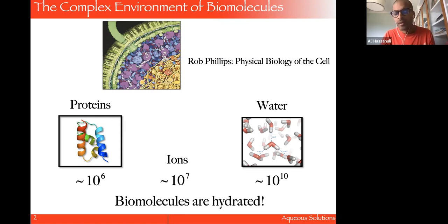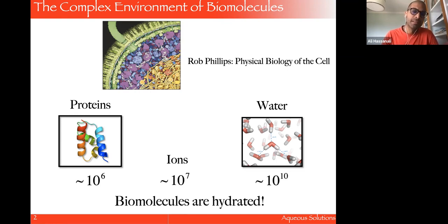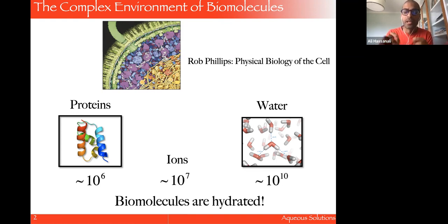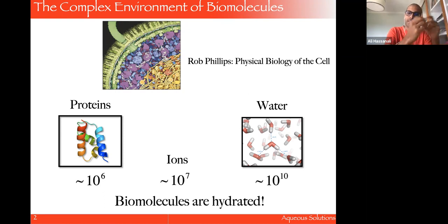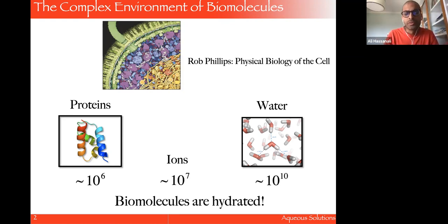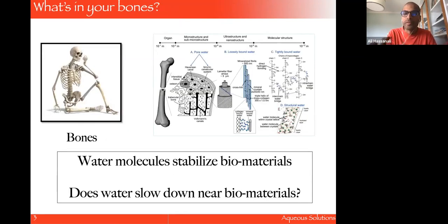Just to give you a sense of the numbers and why it matters to think about the environment in terms of the water of biomolecules — these are typical numbers of proteins, ions, and water molecules in a single cell. If you do a simple calculation, the typical spacing between proteins is on the order of 10 nanometers, which is not large. In between those 10 nanometers is water and ions. So biomolecules, even though you may see them dry or in the gas phase, are actually hydrated, and water can play a role in many different ways.